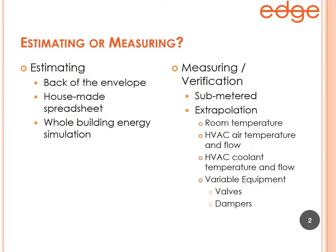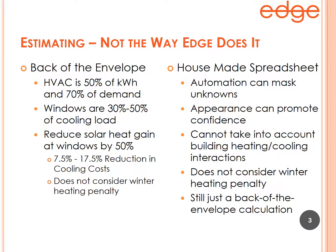That smaller data set could be room air temperatures, or the temperature and flow of air through the HVAC — heating, ventilation, and air conditioning — system. It could be the temperature and flow of the HVAC coolant, or it could be the measurement of some variable equipment such as valves or dampers.